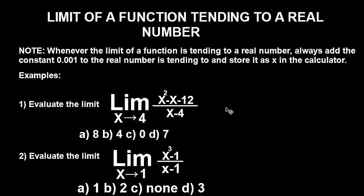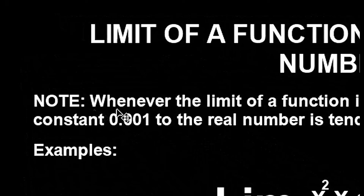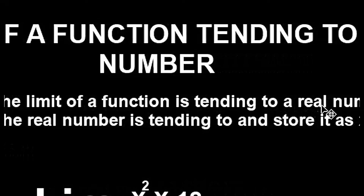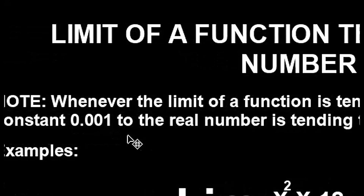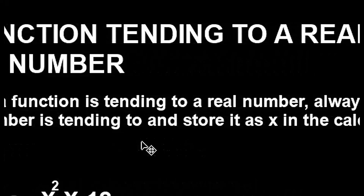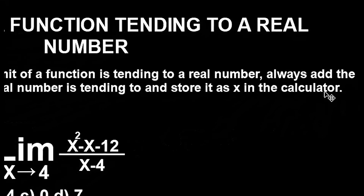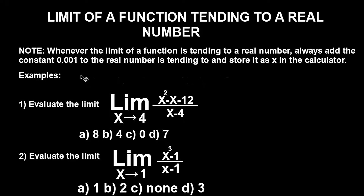Stay with me to the end of this video. Now know that whenever the limit of a function is tending to a real number, always add the constant 0.001 to the real number it is tending to and store it as x in the calculator. Very important — take note of this point. Let's look at some examples and solve them together.